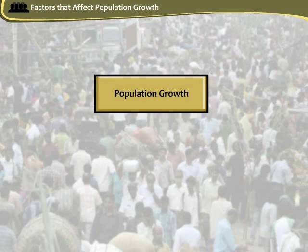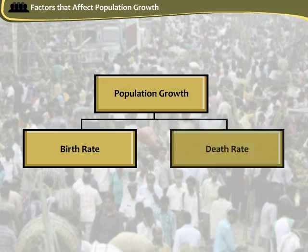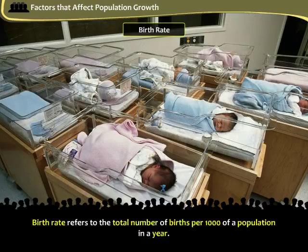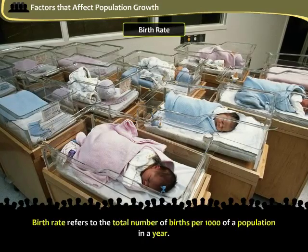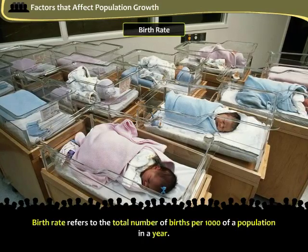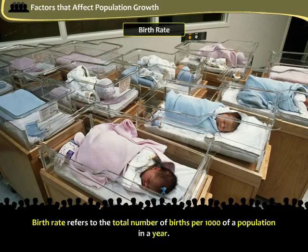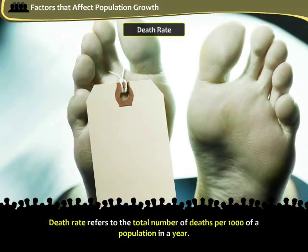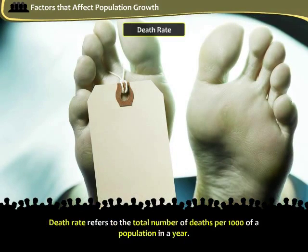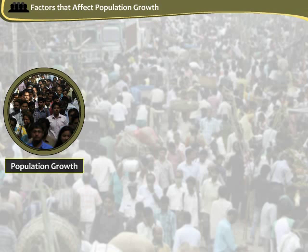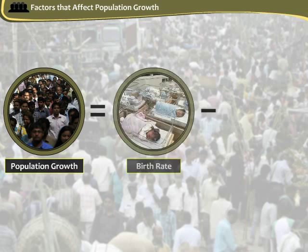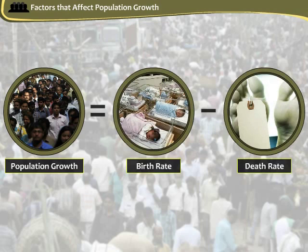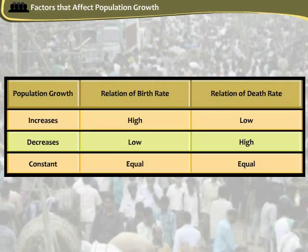Population growth depends on the birth rate and death rate. Birth rate refers to the total number of births per 1000 of a population in a year. Death rate refers to the total number of deaths per 1000 of a population in a year. Population growth rate refers to the difference between birth rate and death rate. The growth in the population is affected by proportional changes in the birth and death rate.